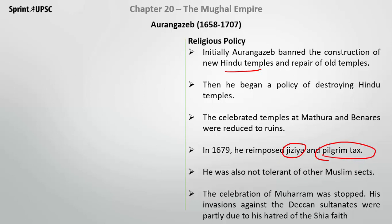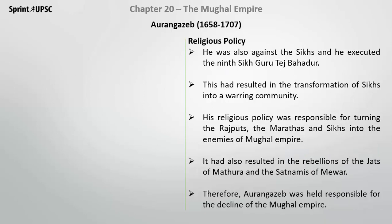It was not only non-Muslim sects that faced intolerance. Other Muslim sects were also treated with intolerance by him. Muharram celebrations were stopped. The invasions of the Deccan Sultanates were partially due to his hatred towards the Shia faith. He was truly an orthodox Muslim who could not tolerate even other parts of the Muslim religion.